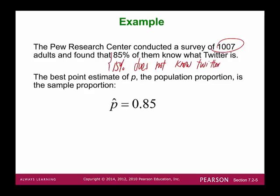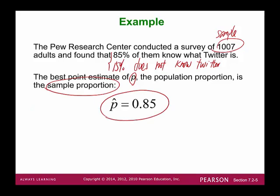Either know Twitter or do not know Twitter. The best point estimate of p is p-hat. In this case, the survey is a sample of 1,007. So 85% is what we call the sample proportion. The sample proportion is the best point estimate of the population proportion, so we can say that p must be around 0.85.